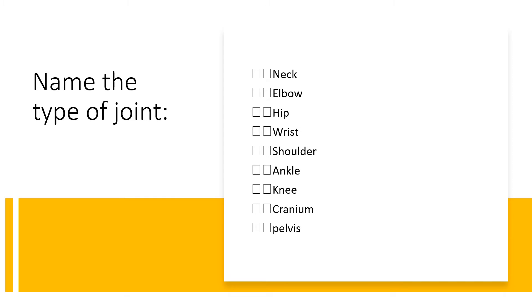It's worth a few minutes to think about the name of the joint found at each location: the neck, elbow, hip, wrist, shoulder, ankle, knee, cranium, and pelvis. Stop the presentation and try to answer these, then check with your teacher.